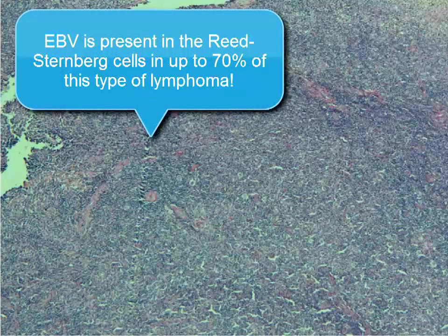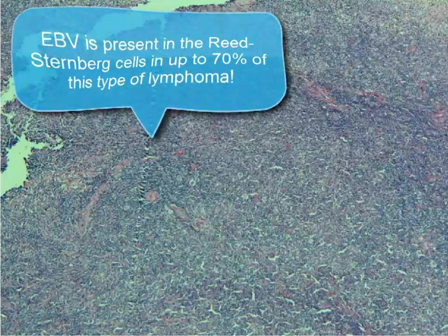This is a case of classical Hodgkin lymphoma, and this is a low-power view of the lymph node that's involved. One interesting thing about Hodgkin lymphoma compared to other lymphomas is that it tends to spread in a systematic fashion from node to node, starting in one node and then moving along the lymph node chain, infecting other lymph nodes. That might have something to do with EBV, which is really commonly found in the Reed-Sternberg cells in this type of Hodgkin lymphoma.